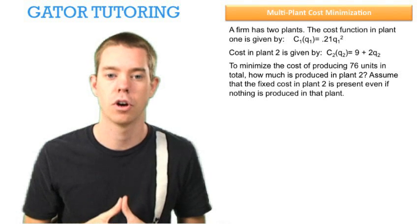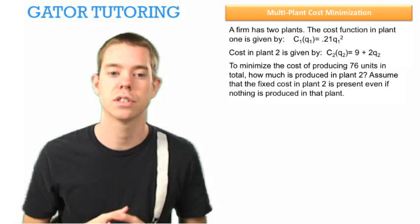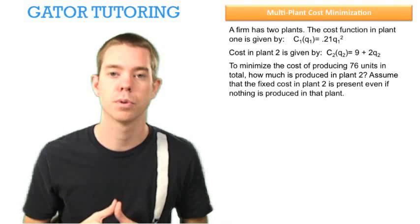Plant 2 has a fixed cost of $9. To minimize the cost of producing 76 units in total, how much is produced in plant 2?